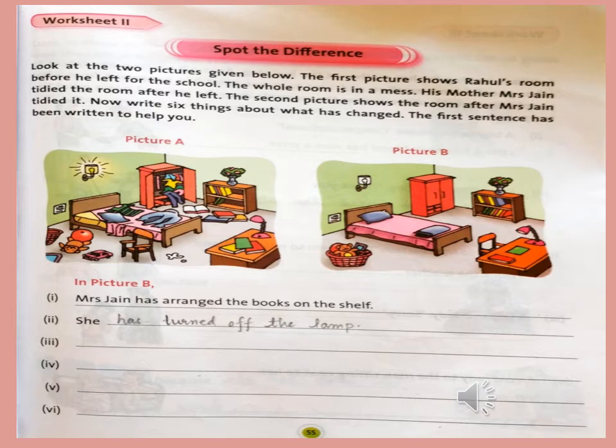In worksheet number 2, here is an interesting activity — Spot the Differences. Look at the two pictures given below. The first picture shows Rahul's room before he left for school. The whole room is in a mess. His mother, Mrs. Jain, tidied the room after he left. The second picture shows the room after Mrs. Jain tidied it. Now write six things about what has changed. Two sentences have been written for your help. As we can see in picture A, it is a very messy room, and in picture B, it is a very tidy room.